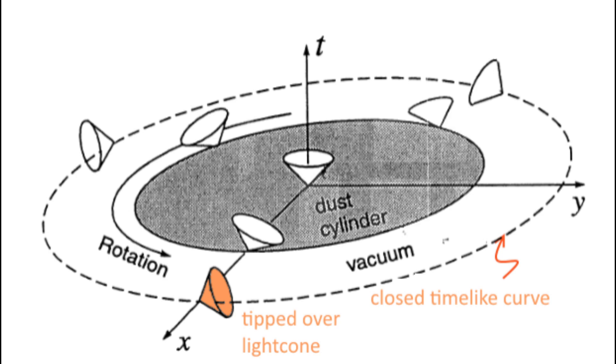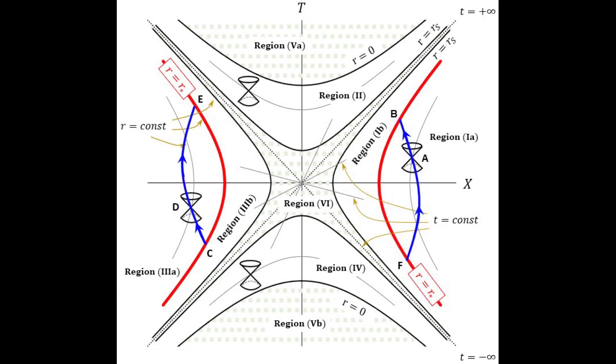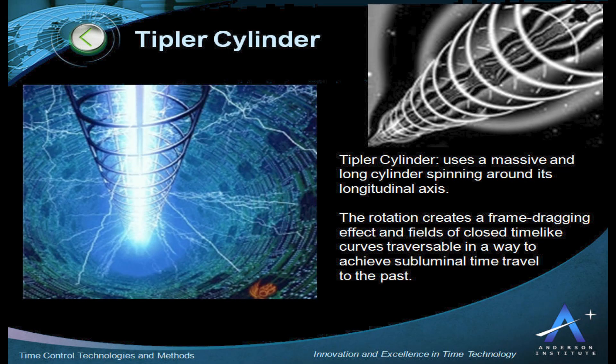CTLs represent paths in space-time that loop back on themselves, theoretically allowing the possibility of traveling forward in time and eventually returning to a point in the past. This concept challenges the traditional view of time as a one-way progression from the past to the future, and suggests that, under certain conditions, time can behave similarly to space.